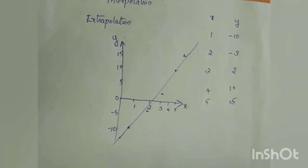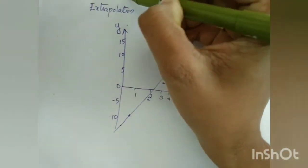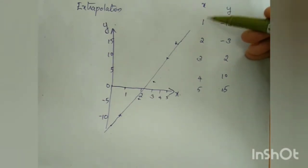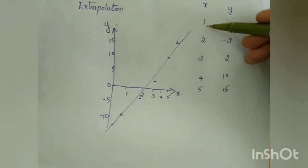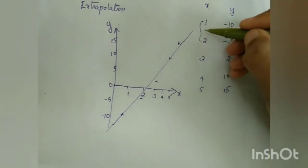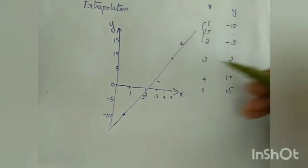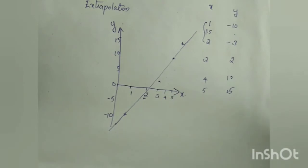Interpolation is the same thing but the opposite. In extrapolation we go outside the range; in interpolation we estimate values in between the tabulated values. For example, if x values are 1, 2, 3, 4, 5, we may want a value at x = 1.5 or x = 2.6 — that is interpolation.